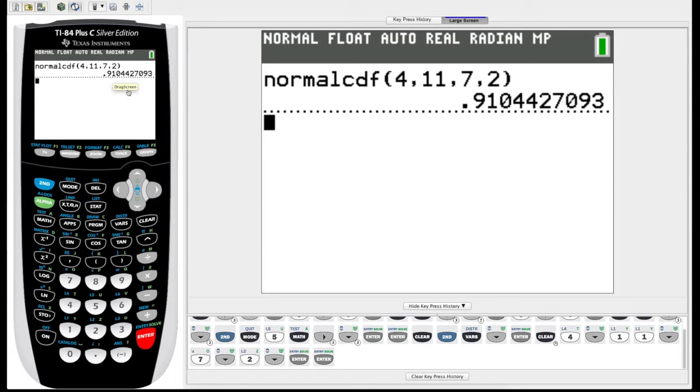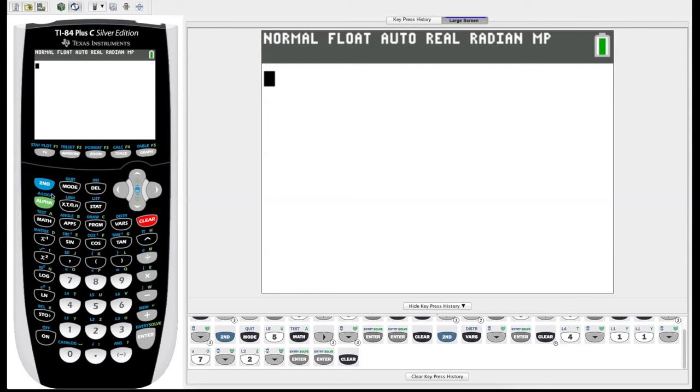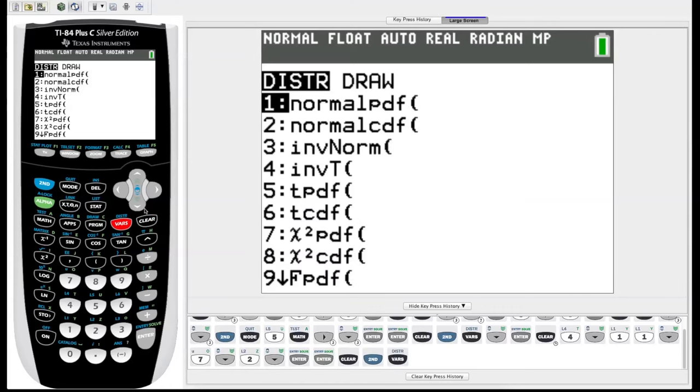Now if our data or events occurring are binomial, we can again go to second vars for distribution and arrow all the way down.